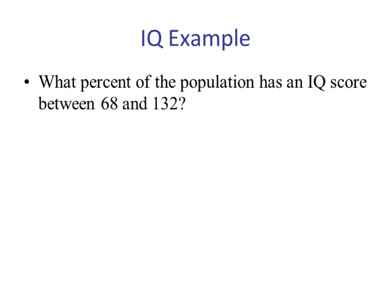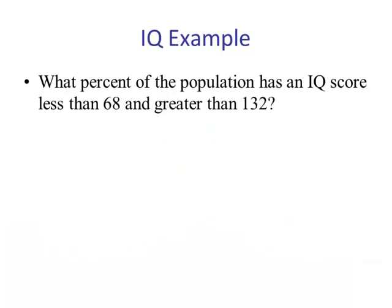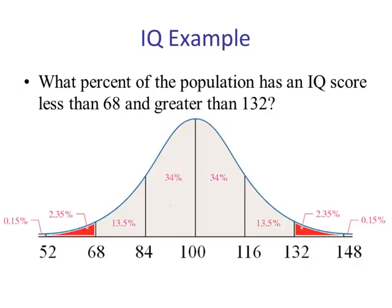What percent of the population has an IQ score between 68 and 132? When we draw our picture, we see that this is exactly two standard deviations below the mean and two above the mean. So the empirical rule says this middle area would be 95%. What percent has a score less than 68 or greater than 132? Using the previous example, the middle chunk is 95%, so the left tail plus the right tail would have to be 5%.